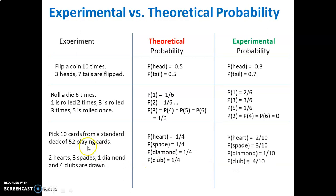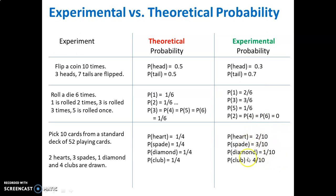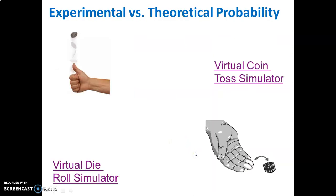However, in our small experiment, there were two hearts, so two out of ten were hearts, and three out of ten were spades, and so on. The results do not match the theory. Again, if we ran a much larger number of trials, we would see our experimental probability get closer to the theoretical.